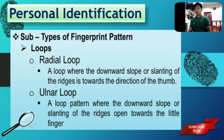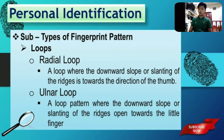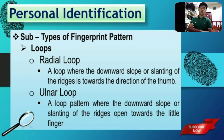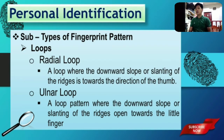So what is a radial loop? A radial loop is a fingerprint pattern where the downward slope or slanting of the ridge is towards the direction of the thumb — meaning that the recurving ridge of this type of pattern opens, enters, and closes toward what we call the thumb. So if the recurving ridge opens towards the thumb, then the pattern will be considered as a radial loop. On the other hand, in an ulnar loop, the recurving ridge opens towards the little finger.